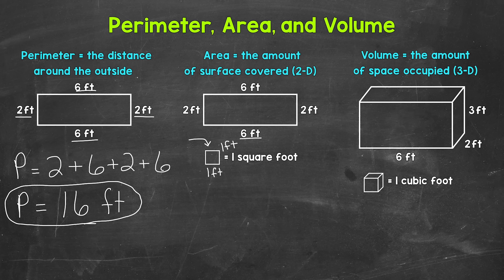Let's start with the six feet going across. Let's draw out the six feet: one, two, three, four, five, and six. Now for our width, which is going the other way, we have two feet. So let's draw out the two feet: one, two feet going that way.